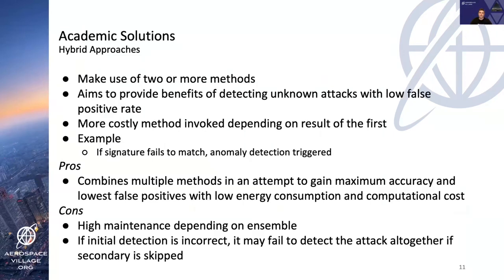Hybrid approaches use two or more detection methods to provide the benefits of detecting unknown attacks with low false positive rates. Usually a low computational cost method is employed first, followed by a more costly method depending on the result. For example, if an attack doesn't match a signature, secondary anomaly detection might be invoked. Pros include maximum accuracy with low false positives and low energy consumption. Cons include high maintenance depending on the ensemble, and if the initial detection is incorrect, the secondary may never be invoked, failing to detect the attack altogether.